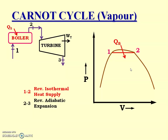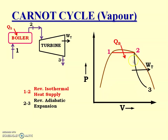Then it passes through process 2 to 3, which happens in the turbine. The name of that process is reversible adiabatic expansion, meaning entropy remains constant. It is drawn as a curve from 2 to 3, and work is given out to the surroundings.